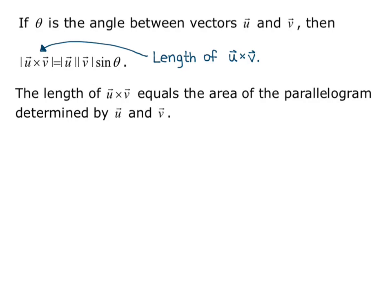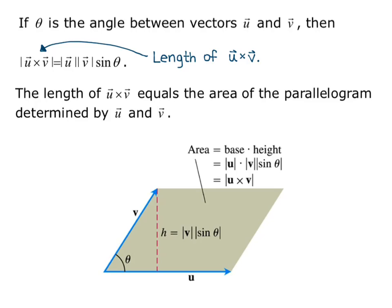The length of u cross v equals the area of the parallelogram determined by u and v. If we have a parallelogram determined by u and v, and theta is the angle between them, we can create a right triangle to figure out the height. We drop a line from the end of v onto u, creating a right angle, and the height is the magnitude of v times the absolute value of sine theta, because h is the opposite side from theta and v is the hypotenuse.